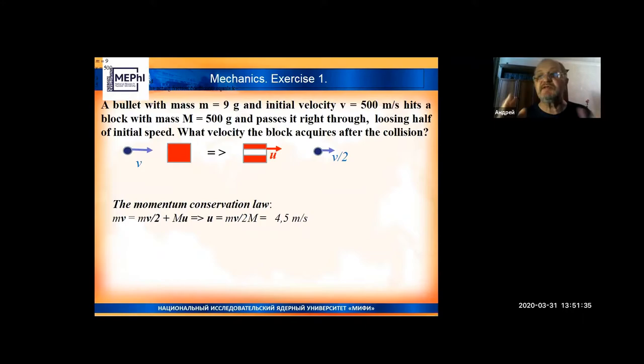But momentum is conserved always, and in this case we may calculate and use it. The only question is what will be the velocity of the block after the process. We shall write down the momentum conservation law equation. What we had before the collision: the resting block with momentum zero and a fastly flying bullet with velocity v and mass m. The only object that had momentum was the bullet, and the momentum was mv.